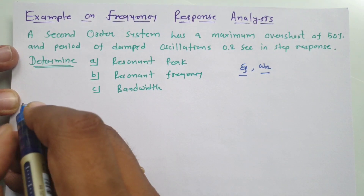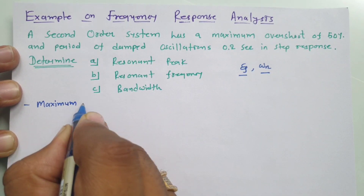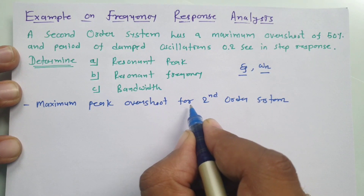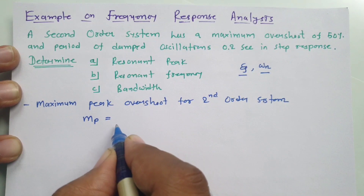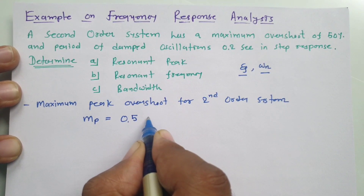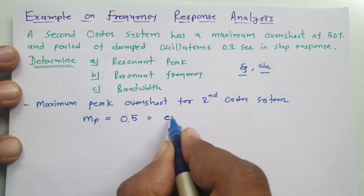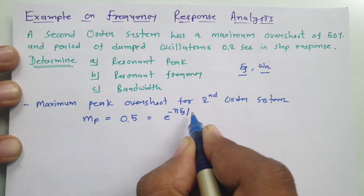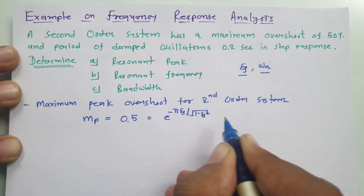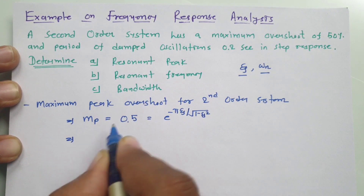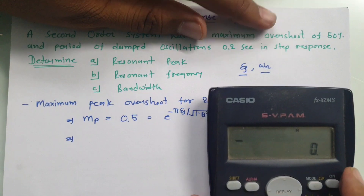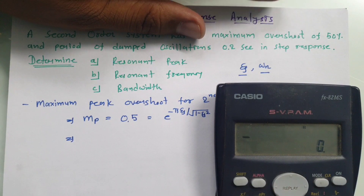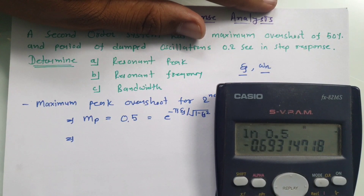The maximum peak overshoot for a second-order system is given by: Mp = e^(−πζ / √(1 − ζ²)). Here Mp is 50%, which means 0.5. To solve for ζ, we take the natural log (ln) of both sides, giving ln(0.5) = −0.6931 = −πζ / √(1 − ζ²).